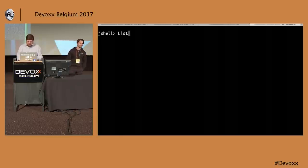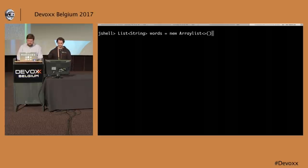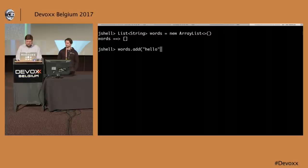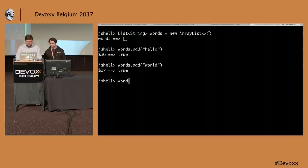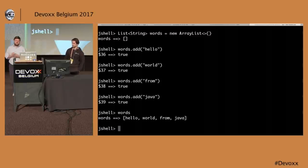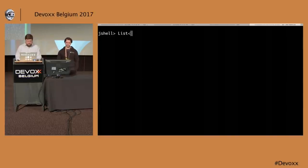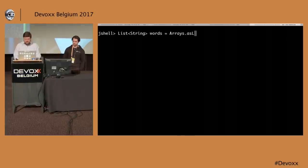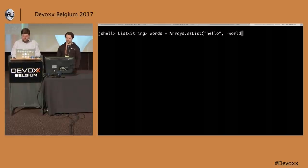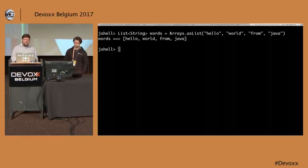A very simple example: adding words into a list. We create an ArrayList and add 'hello', 'world', 'from', 'java' one by one. Our words list does have those words — but it's just so verbose. A better option from Java 5 is Arrays.asList, so you can say Arrays.asList('hello', 'world', 'from', 'java'), which is a lot more concise.